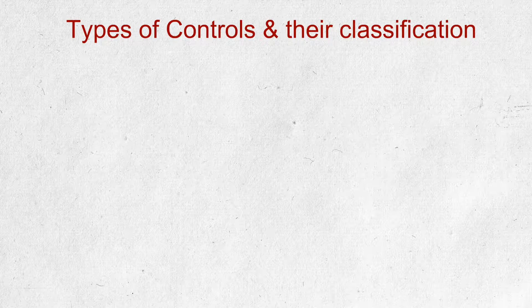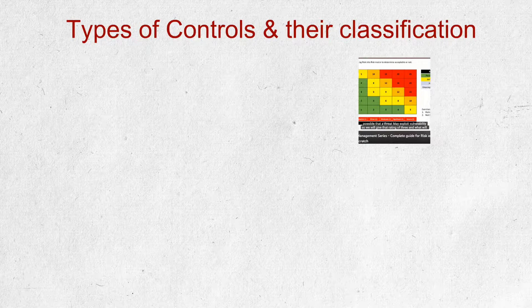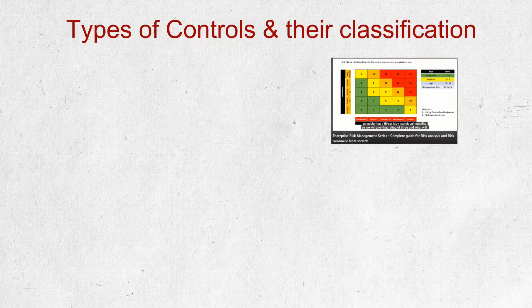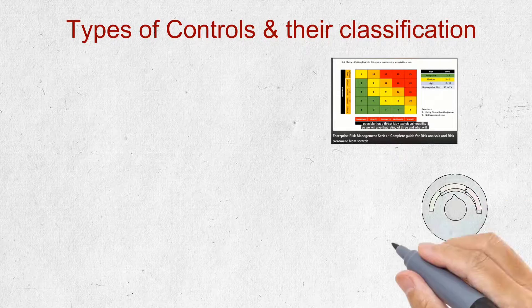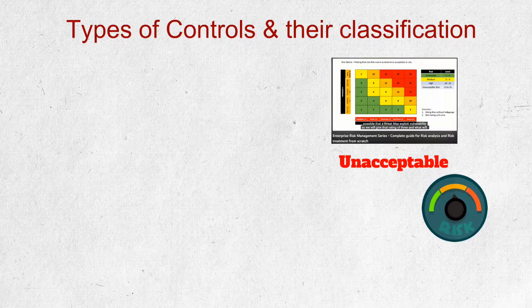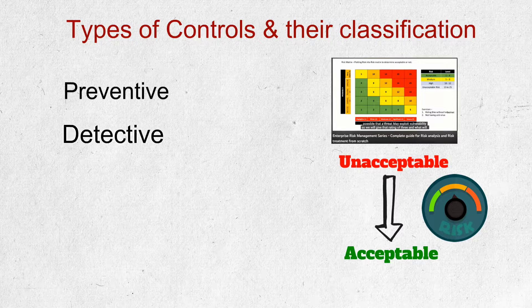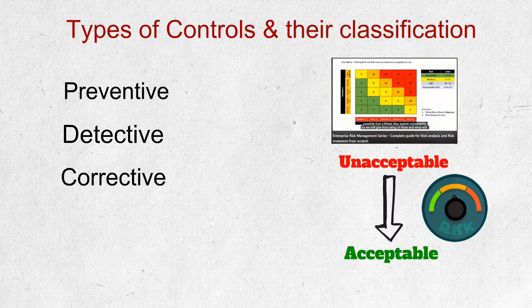Hello friends and welcome back to our new video on types of control and their classification. In our last video, we discussed that once risk is identified, organizations put some controls or countermeasures to bring risk from a high level to an acceptable level. Broadly, there are three types of control: preventive controls, detective, and corrective. Today we will discuss what these controls are, their importance, and how they can be implemented to protect against various security threats.